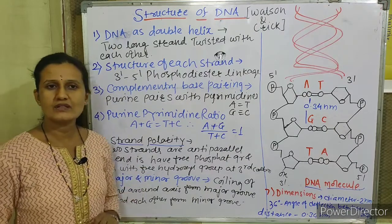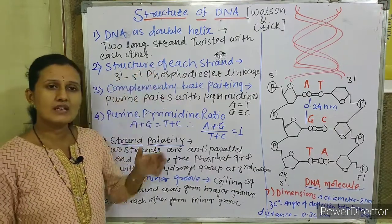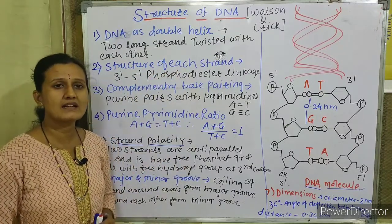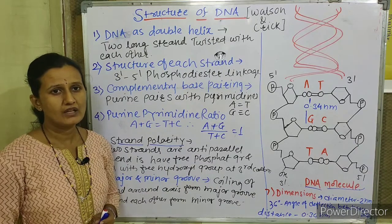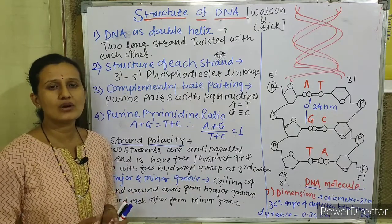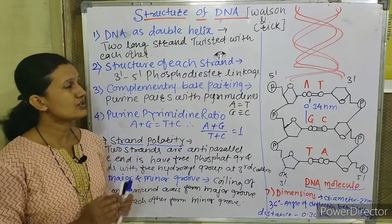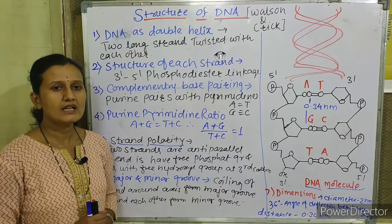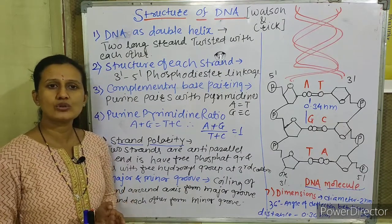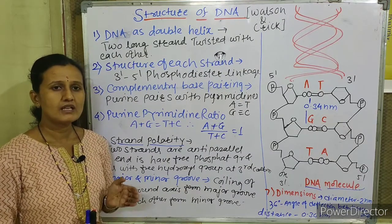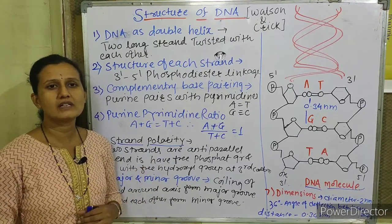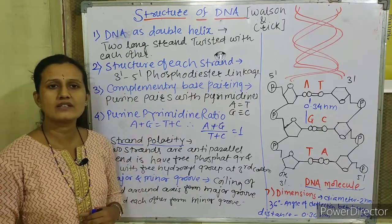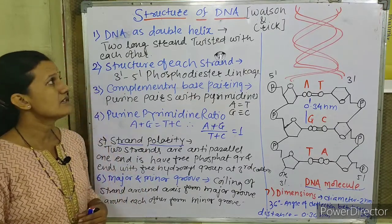Let's start with the structure of DNA. The structure of DNA was described by scientists Watson and Crick in 1953. They created a ball-and-stick model for understanding the structure of DNA using the X-ray crystallography method. X-ray data showed the three-dimensional structure of DNA.